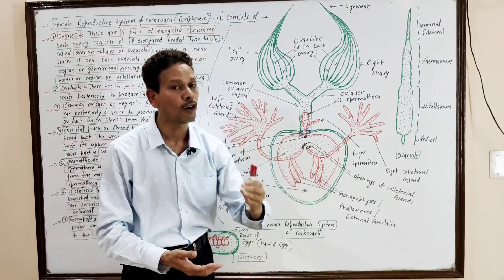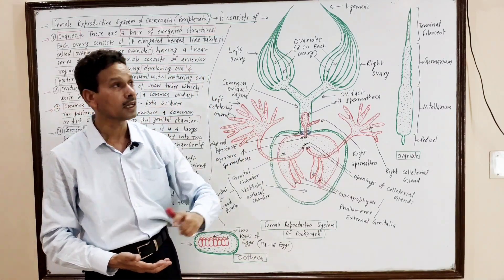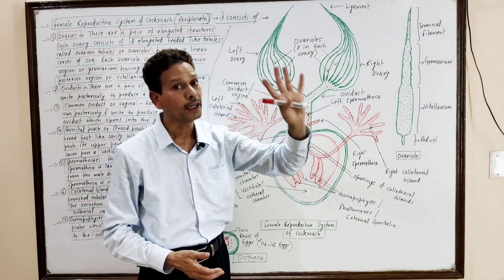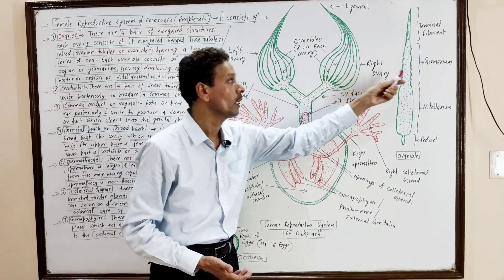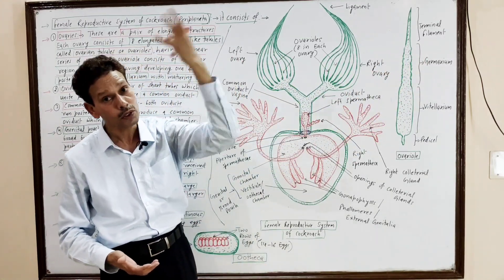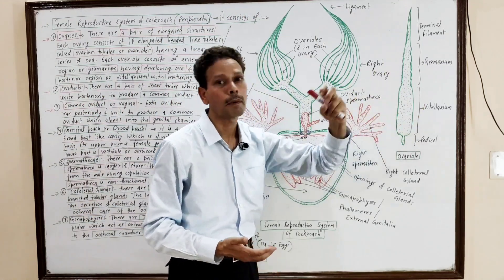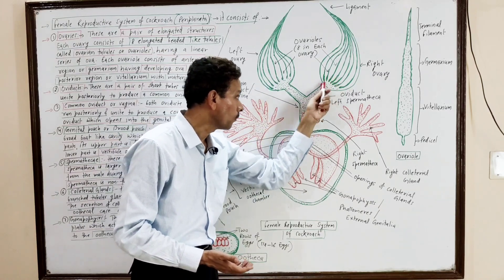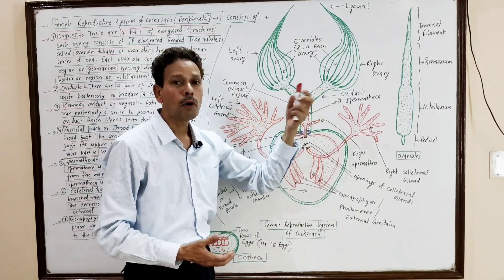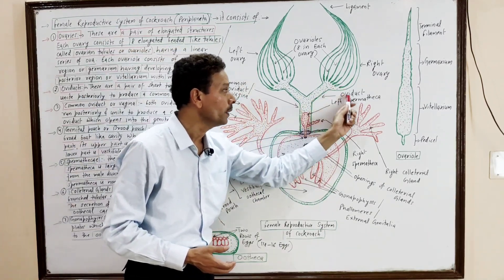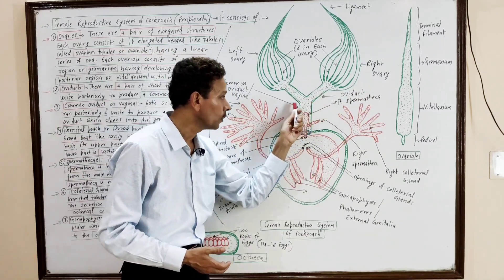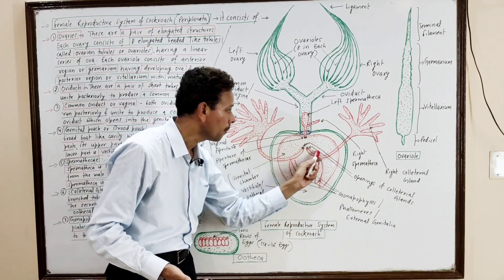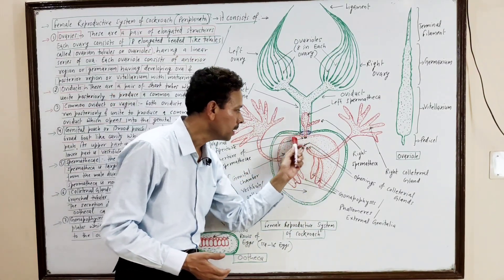To summarize, the female reproductive system of cockroach Periplaneta americana consists of a pair of elongated female gonads — the ovaries. In each ovary, eight elongated beaded-like ovarioles are present. Each ovariole has a beaded germarium with rows of developing ova, and a posterior wider vitellarium in which mature ova are present. From the posterior part of each ovary, small tubular oviducts arise, which unite posteriorly to produce a common oviduct or vagina.